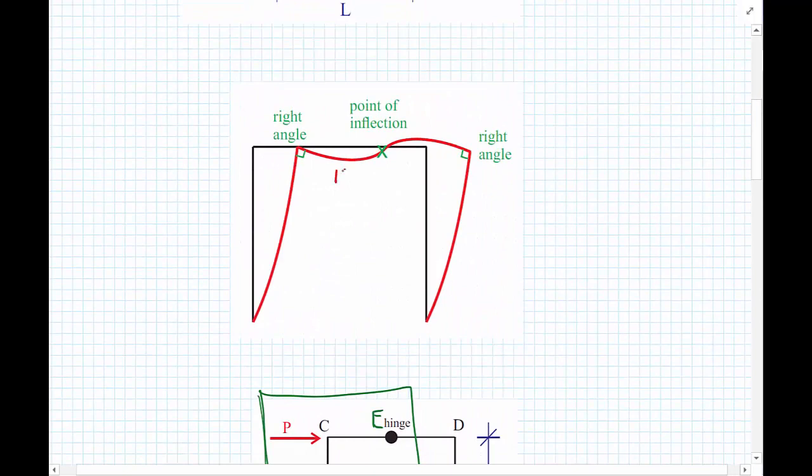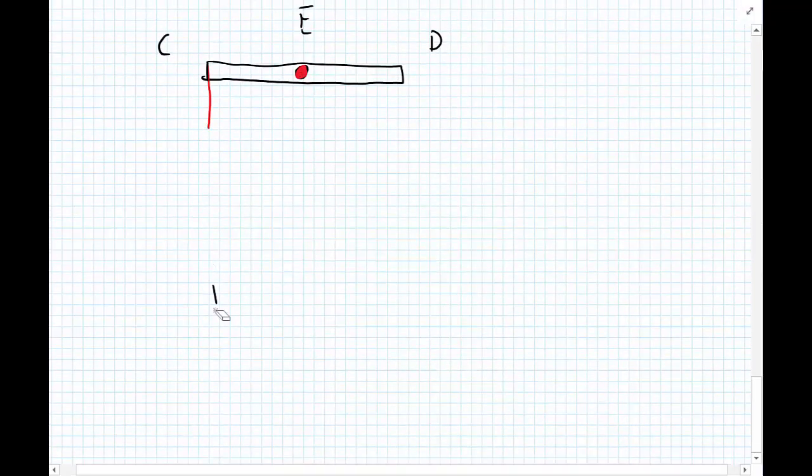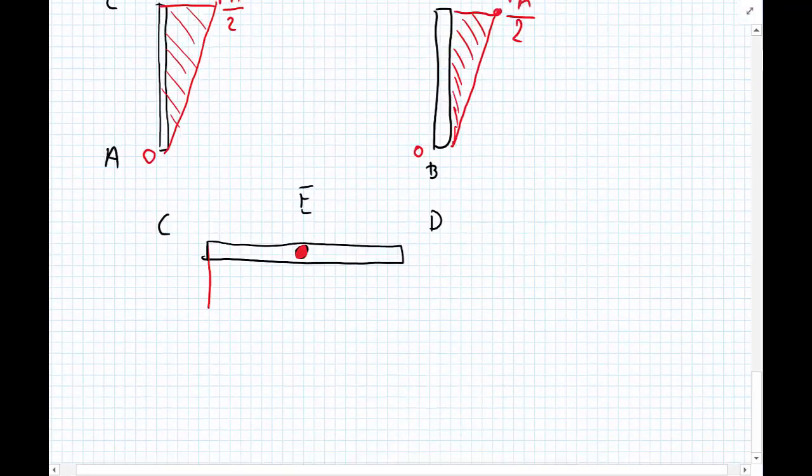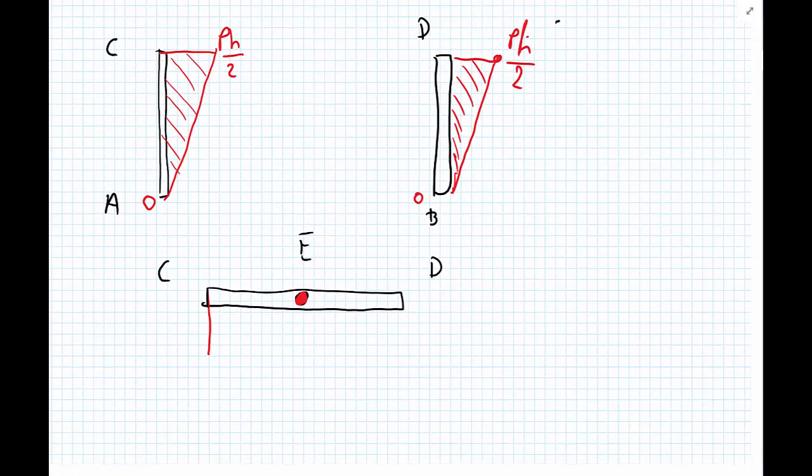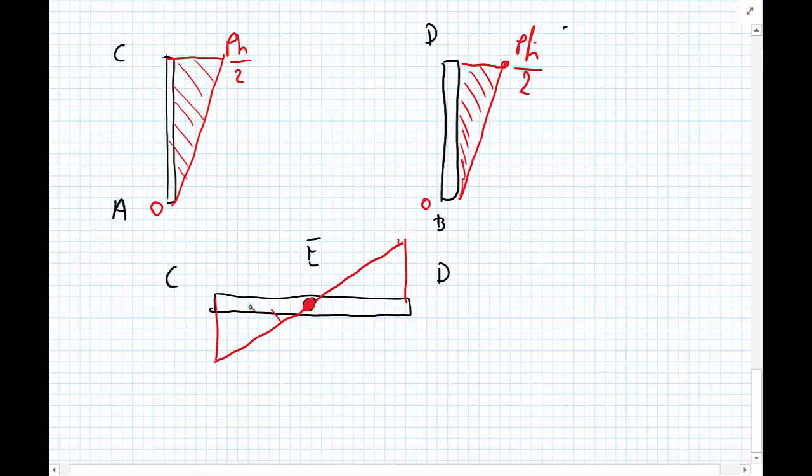We have tension on the bottom on the left-hand side, tension on the bottom on the right-hand side, and we have linear functions for the bending moment as we go along the beam. So our bending moment will be a linear function all the way along the beam with the maximum values again P H upon 2 and P H upon 2.